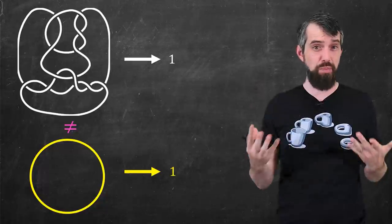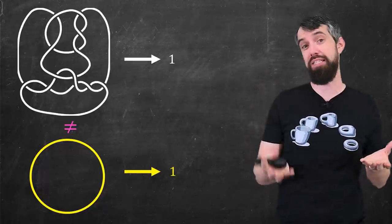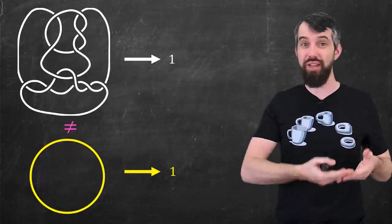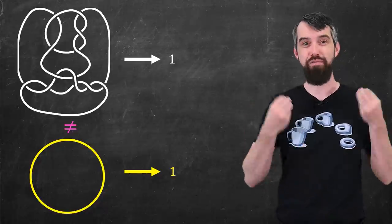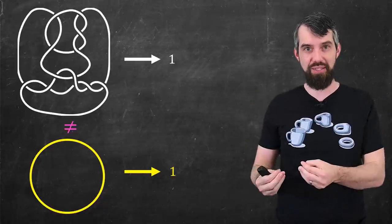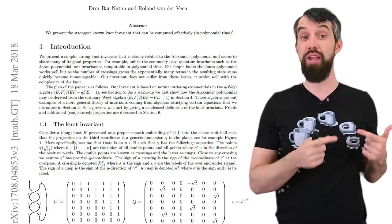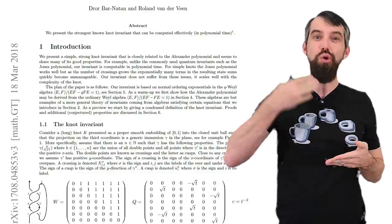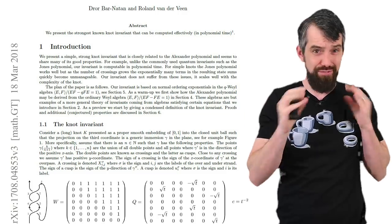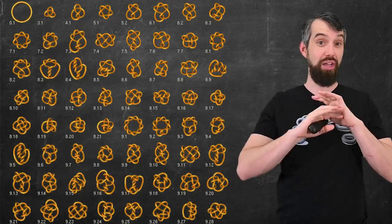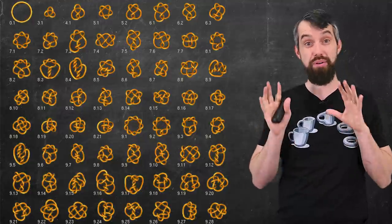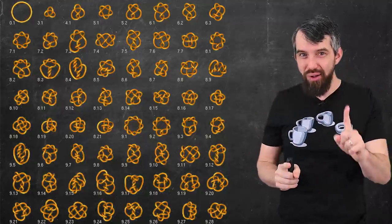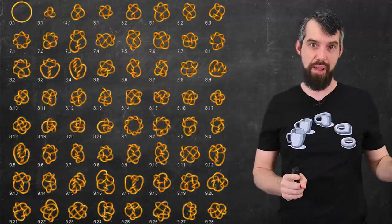There's new polynomials called the Jones polynomials that have different properties in terms of what kinds of knots it can tell the difference of. And work continues to the present day on these kind of polynomial knot invariants. For example, a former professor of mine, Dror Bar-Natan, and his colleague Rowland van der Veen proved a new polynomial invariant that is very strong in the sense that it can look at all different knots of crossing number 10 or less, and it can distinguish all of them apart, but it's also able to be computed in polynomial time.